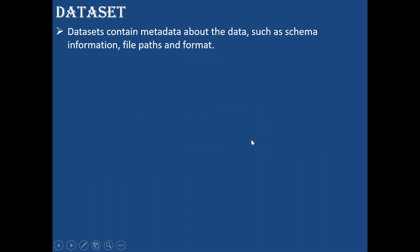Let's get started. So what is a dataset? In the previous session we have seen linked service, which we were using for connecting to various source systems like blob storage, data lake storage, SQL database, file systems, and more. Once the connection is established, we can select the dataset, which contains the metadata about the data — like the schema of the file, the file location, the file format. We can also specify whether we need to read a folder, all files in a folder, files with a specific extension, or a particular file.